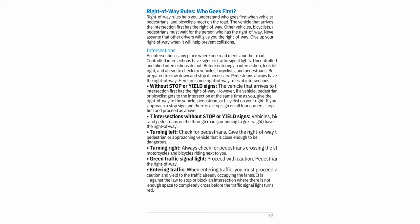Intersections: An intersection is any place where one road meets another road. Controlled intersections have signs or traffic signal lights; uncontrolled and blind intersections do not. Before entering an intersection, check for vehicles, bicyclists, and pedestrians — be prepared to slow down and stop if necessary. Pedestrians always have the right-of-way. Without stop or yield signs: the vehicle that arrives first has the right-of-way; if a vehicle, pedestrian, or bicyclist arrives at the same time as you, give the right-of-way to the one on your right. If there is a stop sign on all four corners, stop first and then proceed as above. T-intersections without signs: vehicles, bicyclists, and pedestrians on the through road going straight have the right-of-way.